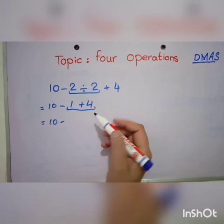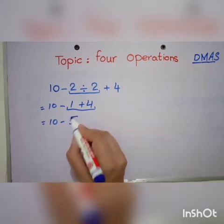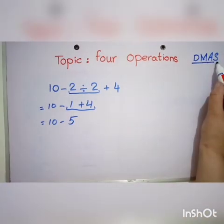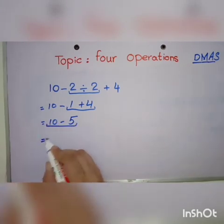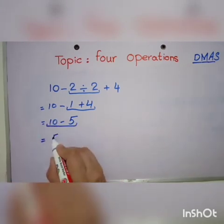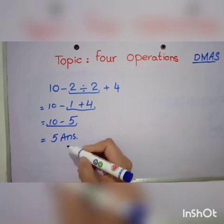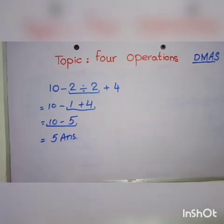4 plus 1 is equal to 5. Now at the end is subtraction. Now we have to subtract this: 10 minus 5 is equal to 5. This is our answer, and this rule can help us to solve the exact answer.